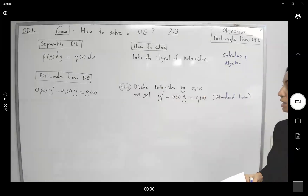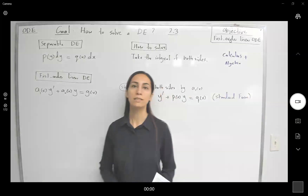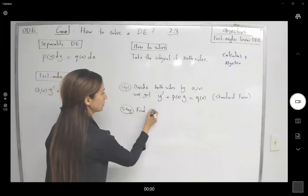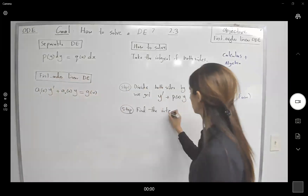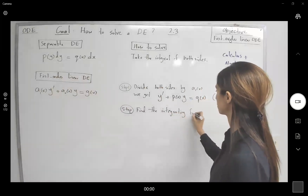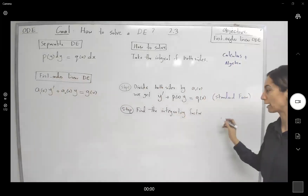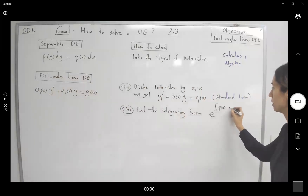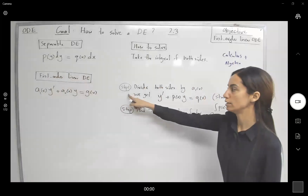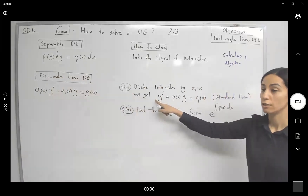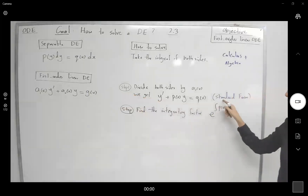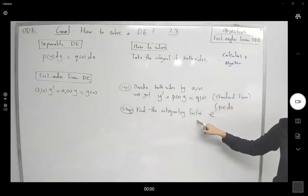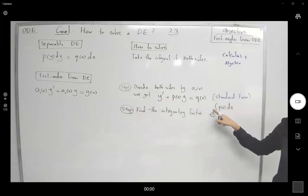What's the next step? In step two, find the integrating factor. The integrating factor in this case is e to the power of the integral of p(x) dx. So: step one, write your first-order linear differential equation in its standard form; step two, find the integrating factor, which is e to the power of the integral of p(x) dx.